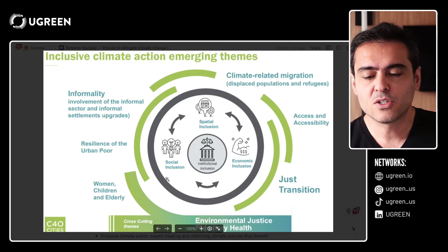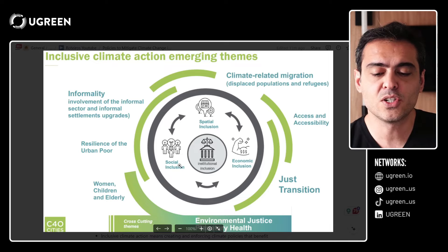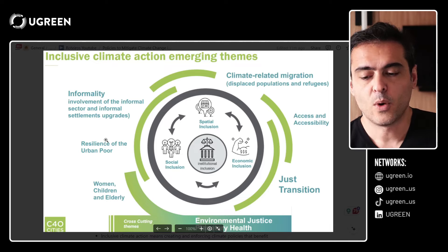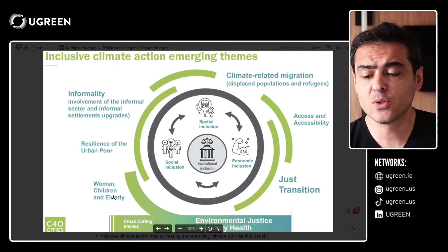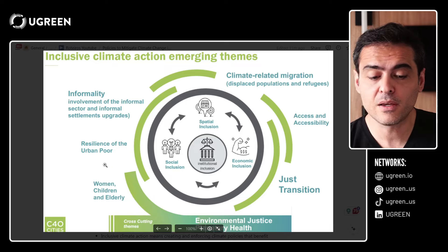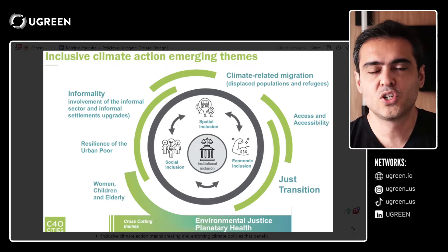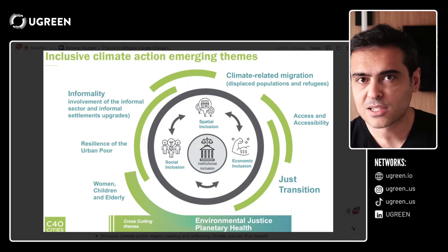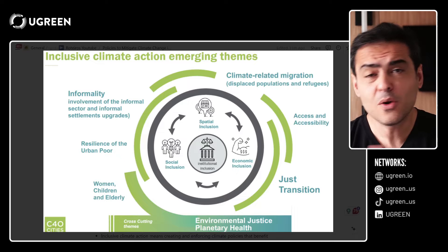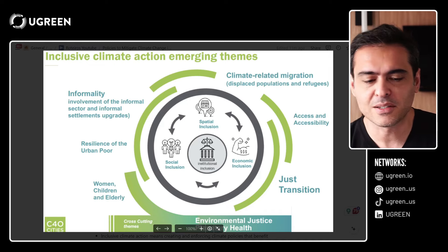Here we can see social inclusion, economic inclusion, and spatial inclusion, all managed by institutions — resilience of the urban poor, women, children and the elderly, access and accessibility. All those things need to come together. We can't just provide the best solutions for rich people and rich regions. Usually that is what happens, but let's not talk about that today — we are talking about so many beautiful things here.